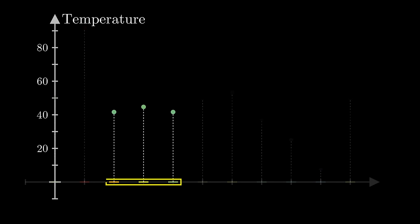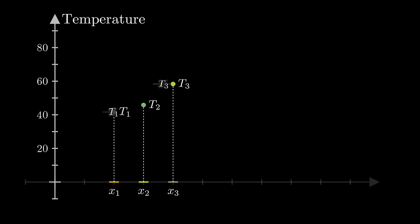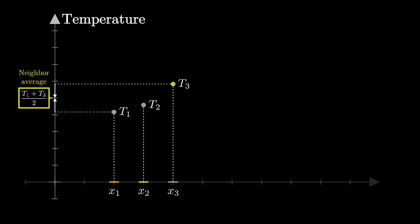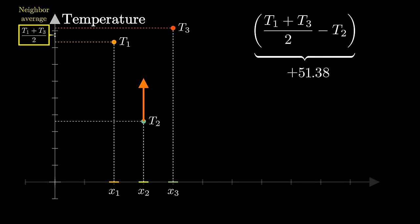Here, specifically focus on these three neighboring points, x1, x2, and x3, with corresponding temperatures t1, t2, and t3. What we want to compare is the average of t1 and t3 with the value of t2. When this difference is greater than zero, t2 will heat up. And the bigger the difference, the faster it heats up.